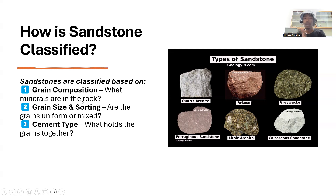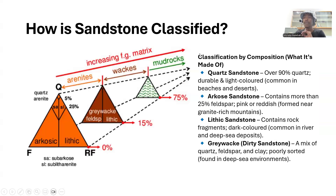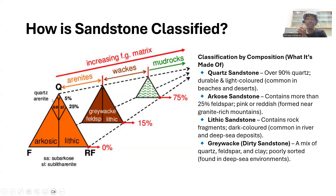Sandstone is mostly classified according to its chemical composition. We are going to talk about quartz, feldspar, and lithics — that is basically how you classify sandstone according to composition. Later on we will deal with how to classify it according to grain size and cement types. The term 'arenite' comes from 'arena,' meaning sand in Spanish. The sandstone is subdivided based on the percentage of quartz, feldspar, and unstable lithic fragments.